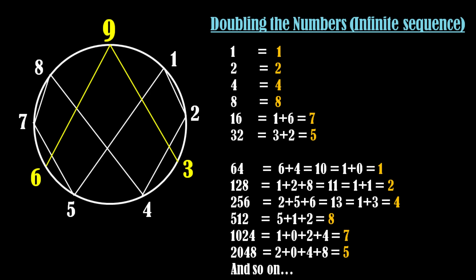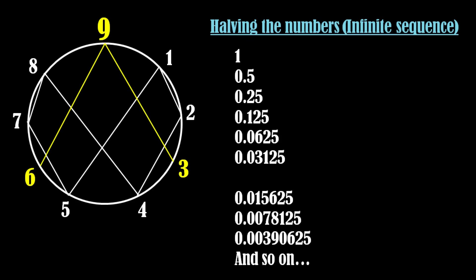Even if you repeat it up to infinity, the same pattern repeats. Now instead of doubling the numbers, let's half the numbers repeatedly. This time also we will start with number 1. Add all the digits of the number and get the digital root as shown here.